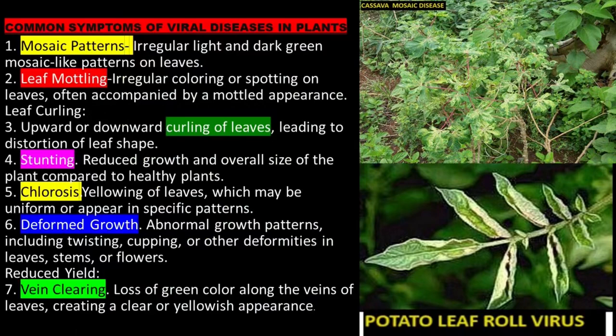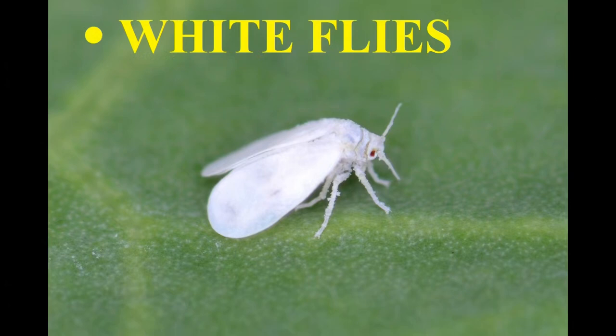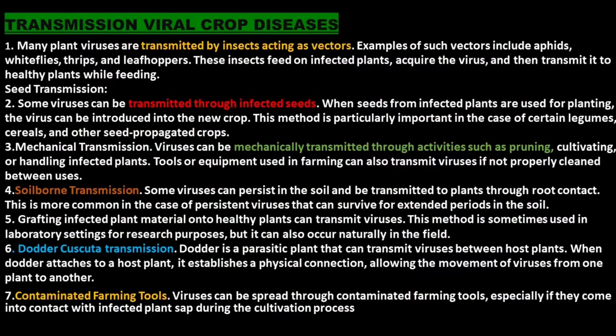Many plant viruses are transmitted by insects acting as vectors. Examples of such vectors include aphids, whiteflies, thrips, and leafhoppers. These insects feed on infected plants, acquire the virus, and then transmit it to healthy plants while feeding. Some viruses can also be transmitted through infected seeds; when seeds from infected plants are used for planting, the virus can be introduced into the new crop.